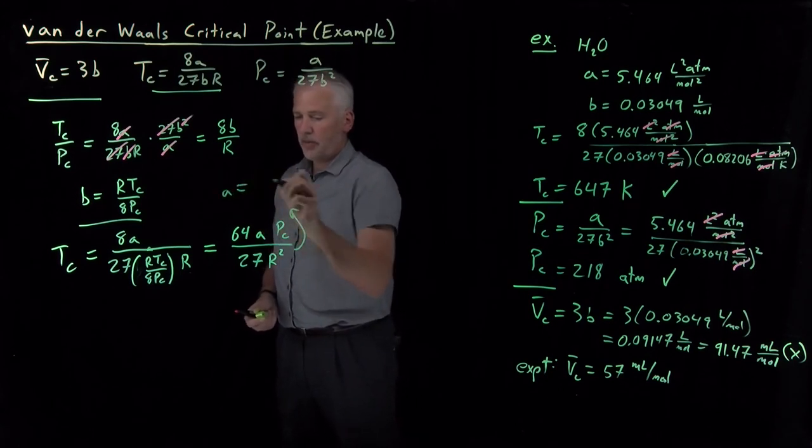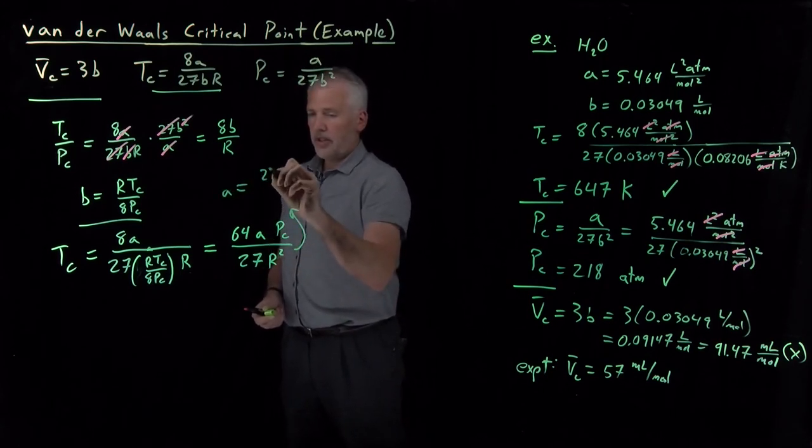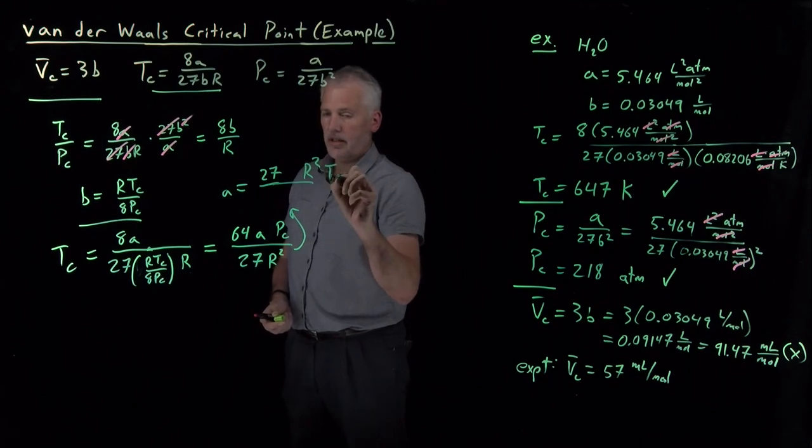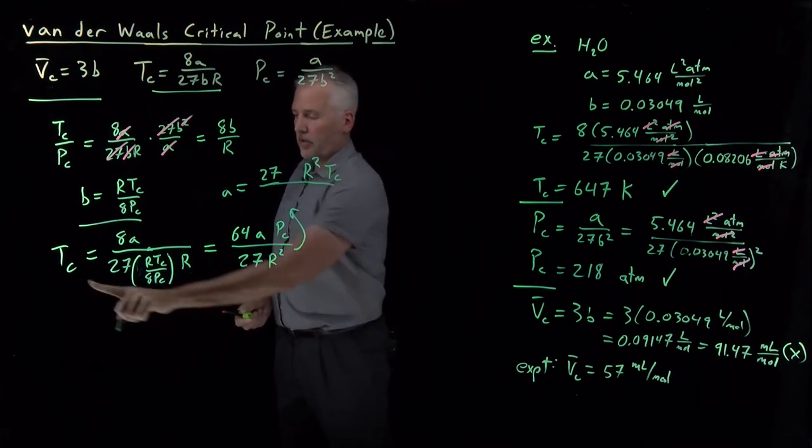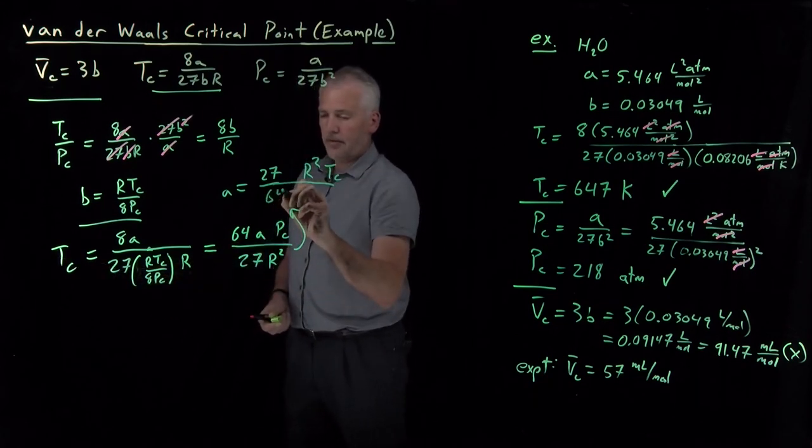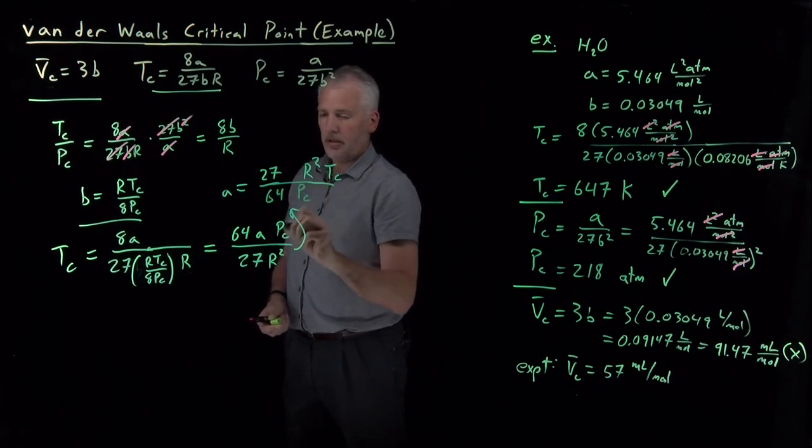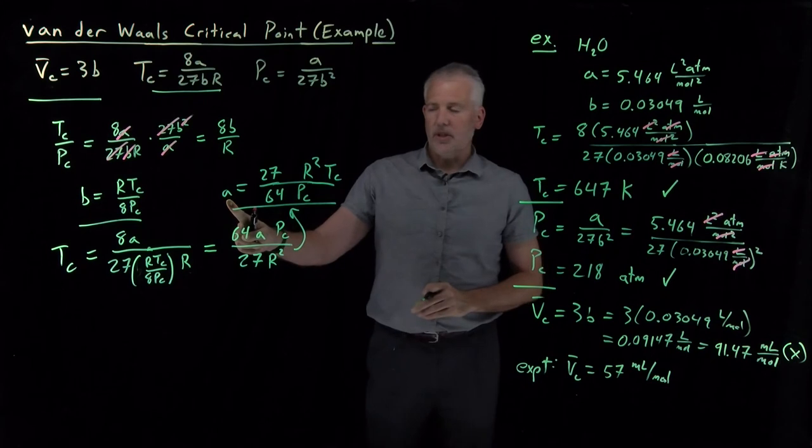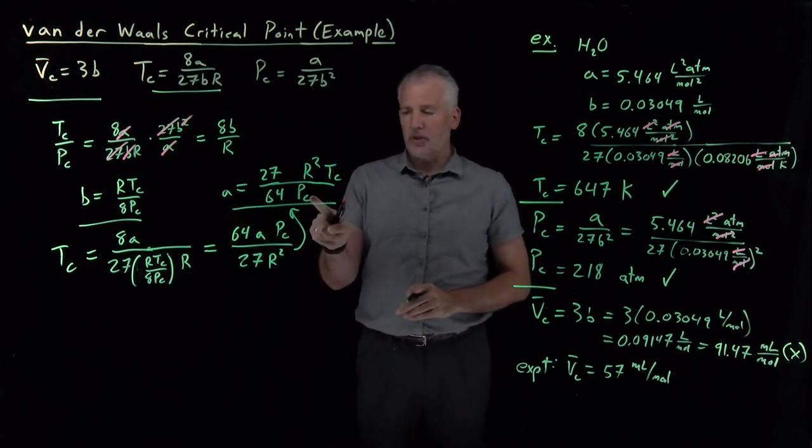I'll get A is equal to 27 and an R squared and a T - I'm going to bring those over to the other side - divided by a 64 and a pressure. So there's an expression for how to calculate the Van der Waals constant A if I know the critical temperature and critical pressure.